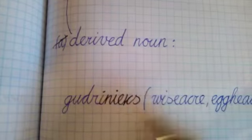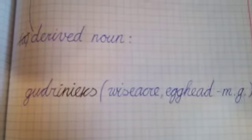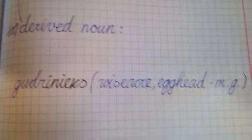The derived noun from it is removing ending s and adding ending inieks. It becomes gudrinieks, which is wise echo, egghead, male gender.